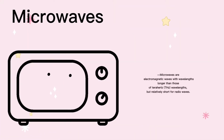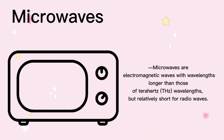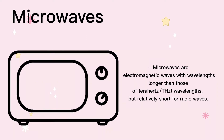Microwaves are electromagnetic waves with wavelengths longer than those of terahertz wavelengths, but relatively short for radio waves.